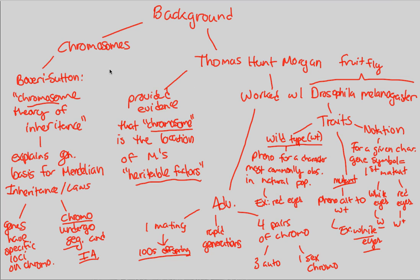Overall, in terms of our background: the Chromosome Theory of Inheritance was developed by Boveri and Sutton, explaining what Mendel stated through his two laws. Thomas Hunt Morgan played a major role in non-Mendelian genetics and provided evidence that hereditable factors are chromosomes. He worked with Drosophila melanogaster — the fruit fly — using it because of its lab advantages. Understand what wild type means, what mutant means, one is most common and one is not, and the notation: the mutant phenotype is just the letter, the wild type phenotype is the letter with a plus sign.